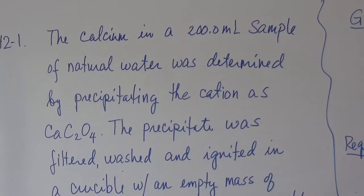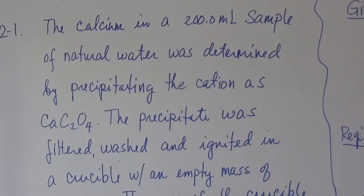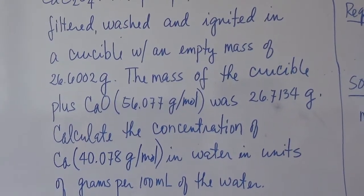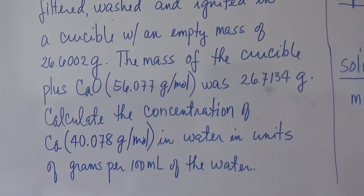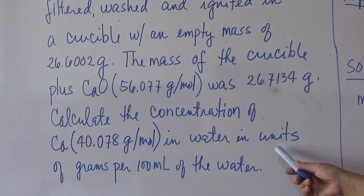Let us solve a problem about gravimetric analysis. This is sample problem 12-1 from chapter 12. The calcium in a 200 mL sample of natural water was determined by precipitating the cation as calcium oxalate. The precipitate was filtered, washed, and ignited in a crucible with an empty mass of 26.6002 g. The mass of the crucible and calcium oxide was 26.7134 g. Calculate the concentration of calcium in water in units of grams per 100 mL.